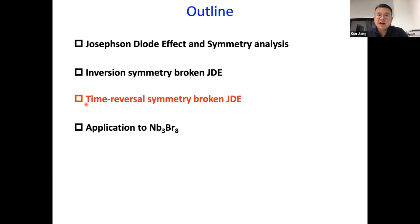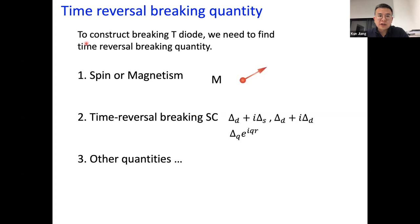Another, and the most important example in this workshop, is the time-reversal-symmetry-broken Josephson diode effect. To construct a time-reversal-symmetry-broken Josephson diode, we need to find time-reversal-symmetry-breaking quantities. The foremost one is spin or magnetism — including spin magnitude and direction. Another is time-reversal-breaking superconductors, such as d+id or d+s pairing found in high-temperature superconductor research, and also PDW or FFLO states. If the system condenses into a single wavevector, this also breaks time-reversal symmetry. There are also many other quantities that break time-reversal symmetry and could be used to construct a Josephson diode effect.